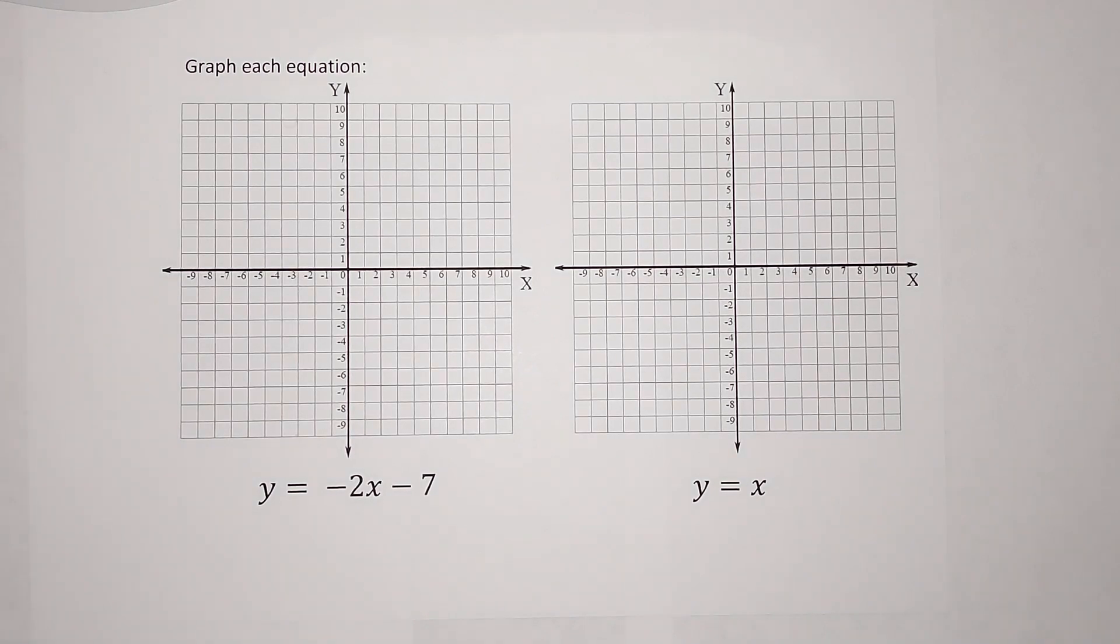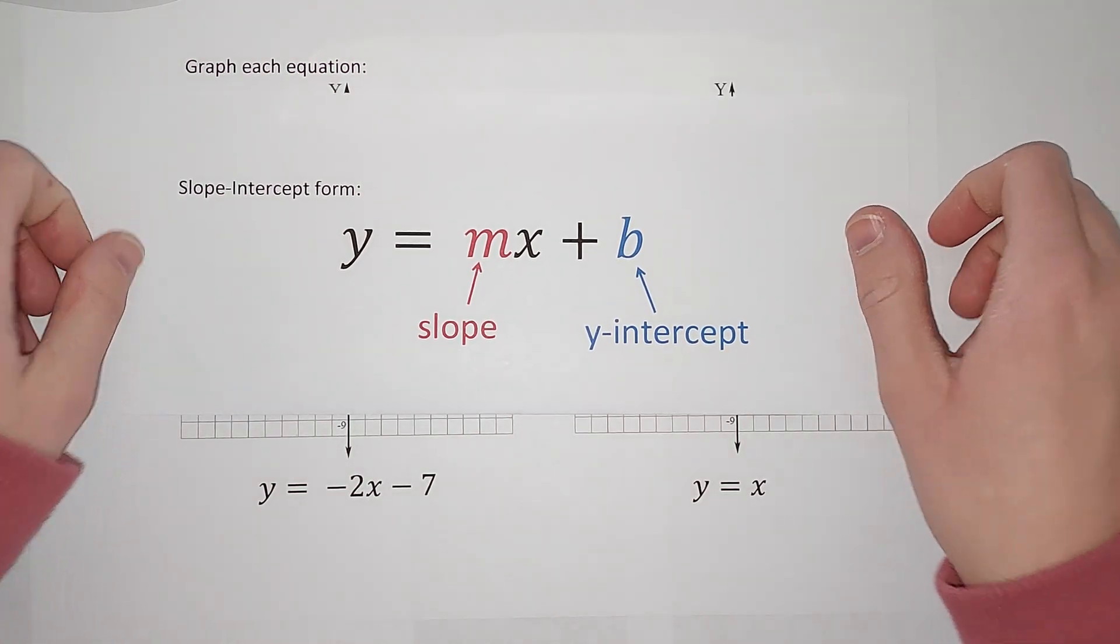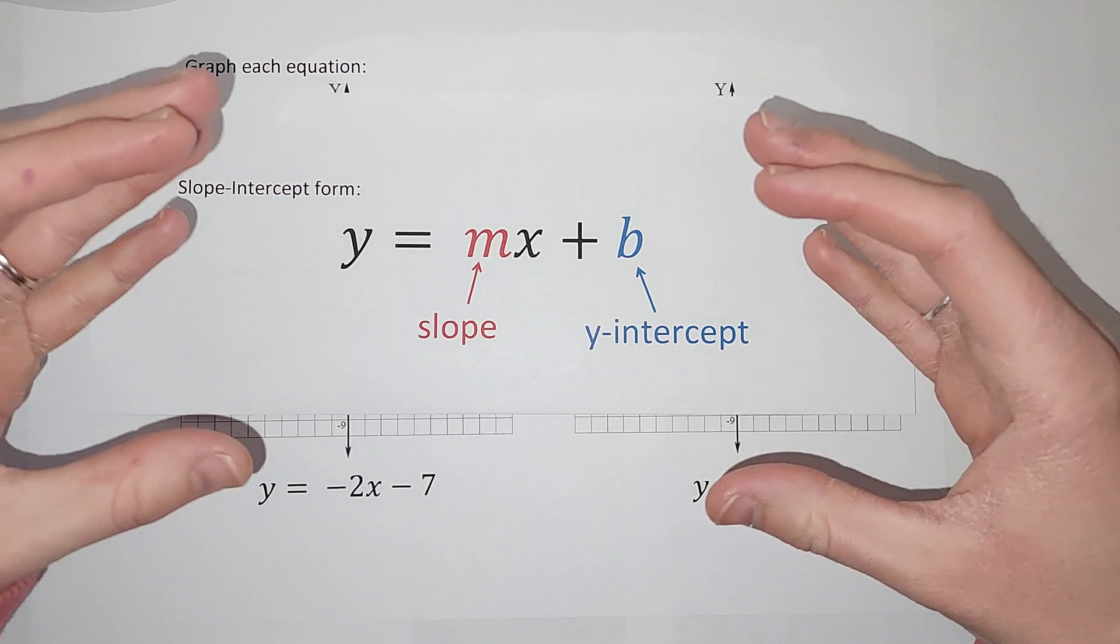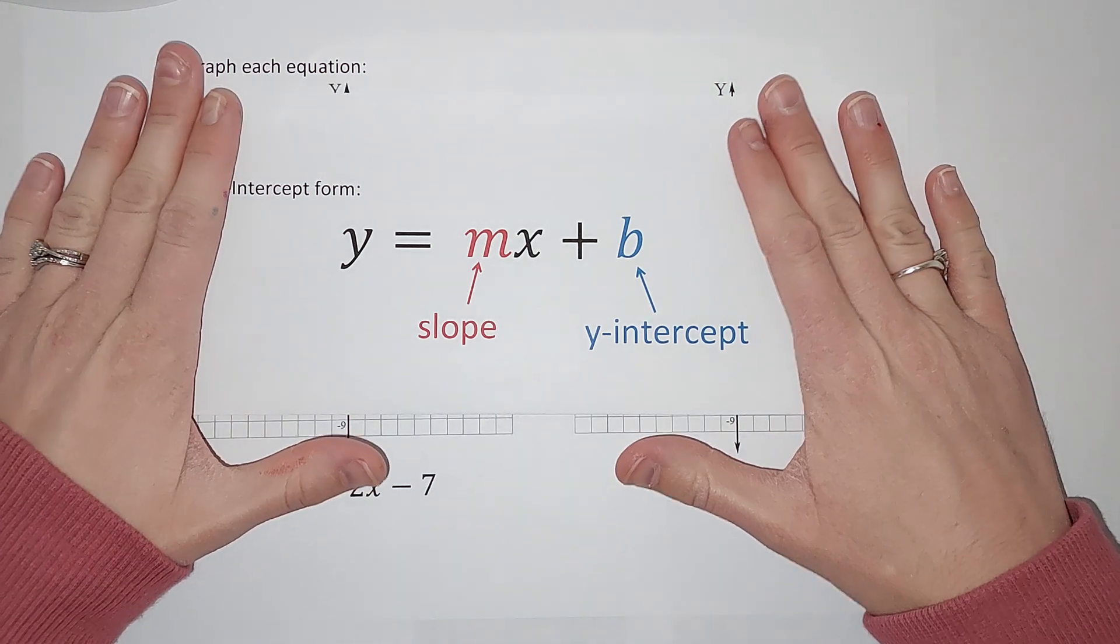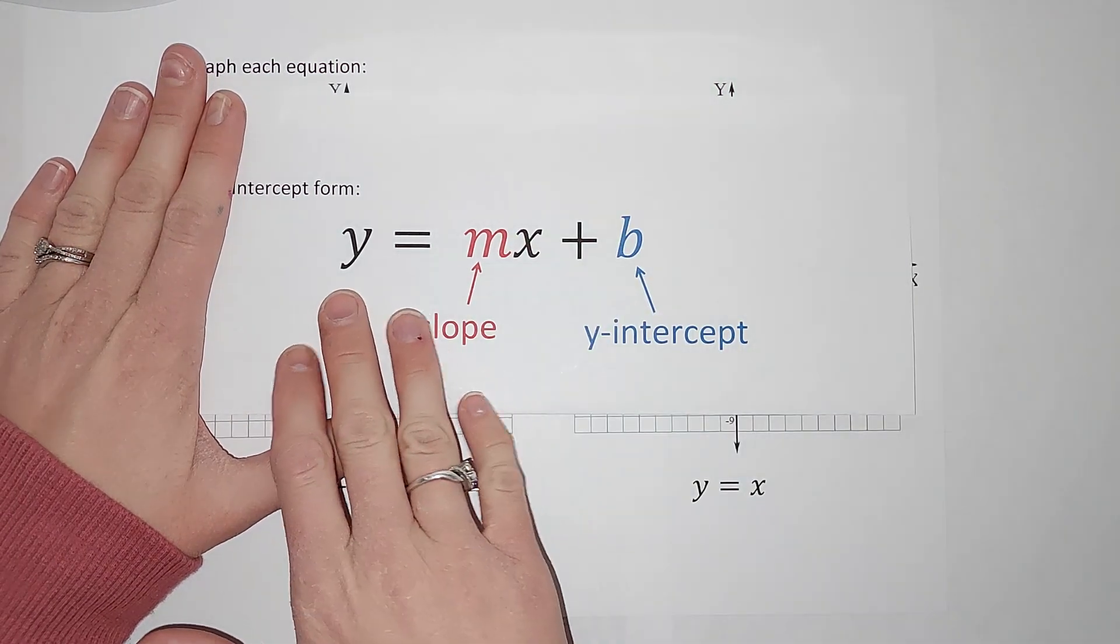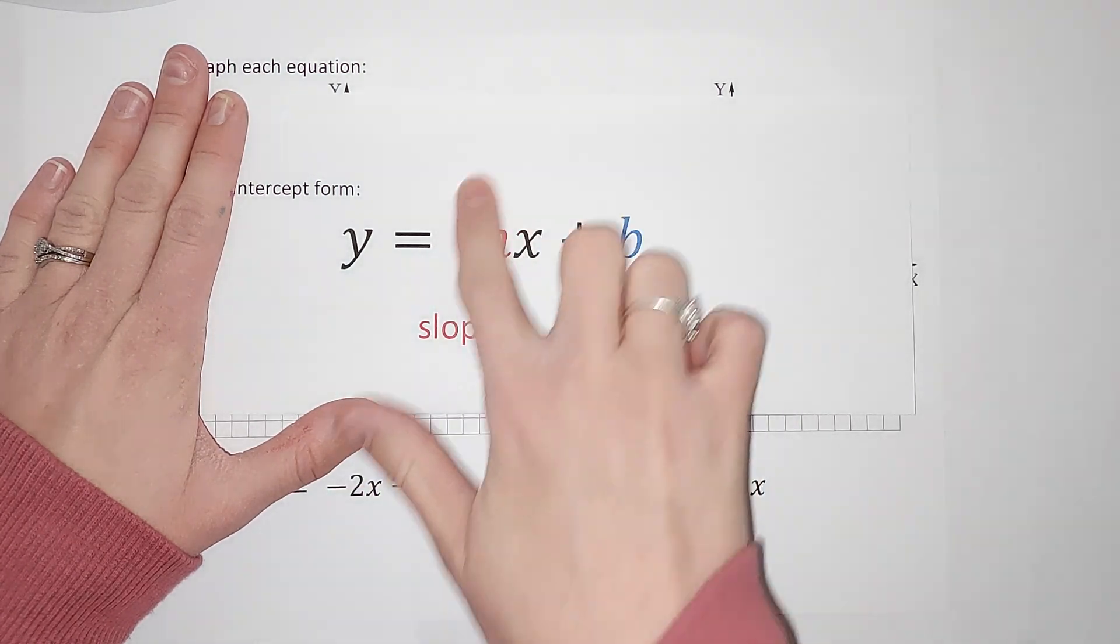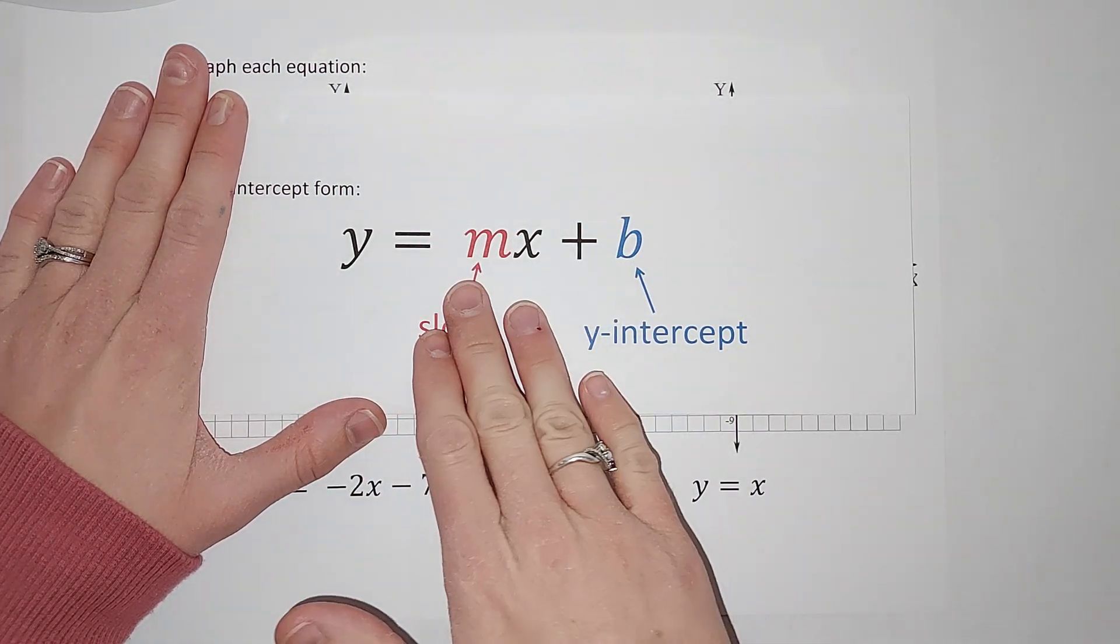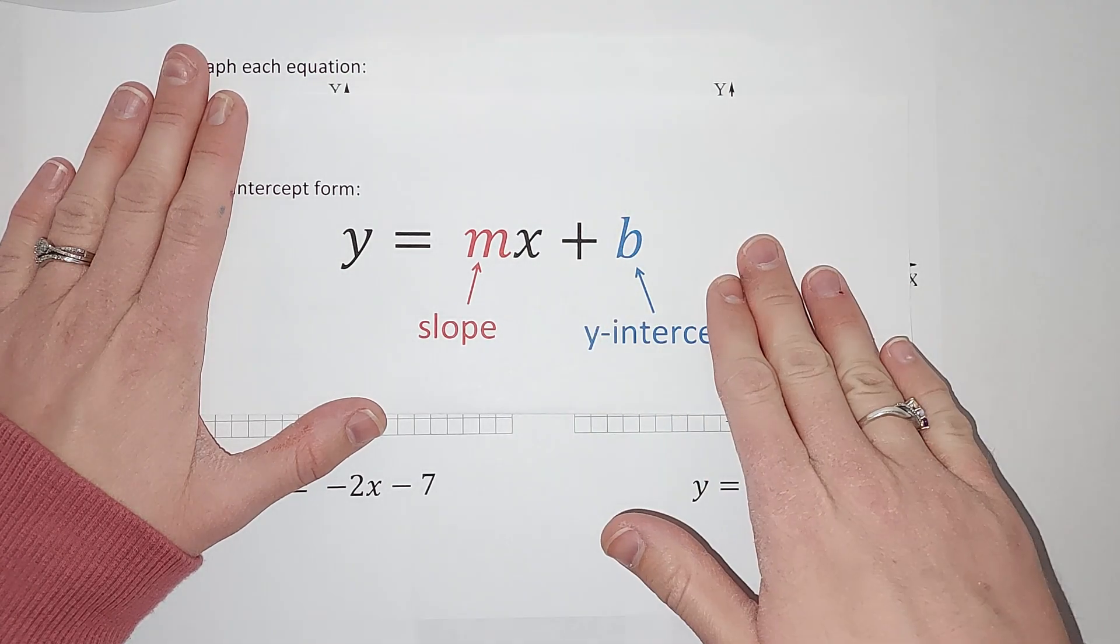So what we're going to do is look for what we call slope intercept form. If our equation is set up like this, the information we need is right in front of our face. So basically, if you're asked to graph a line, if you can get it into this form where you have y equals, the m will be a number. A number x plus or minus another number.